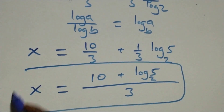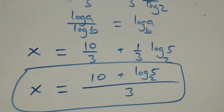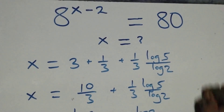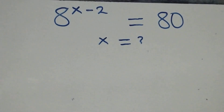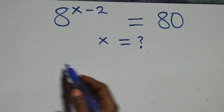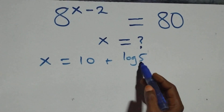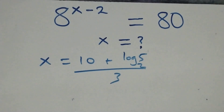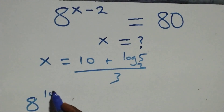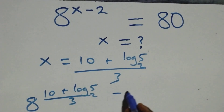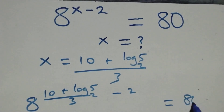Bringing this together as a single fraction, x equals (10 plus log 5 base 2) all over 3. That is the value of x. Let's verify this satisfies the given equation by substituting x equals (10 plus log₂5) over 3 back in, and checking: 8 raised to power x minus 2 equals 80.